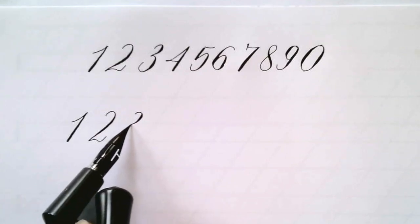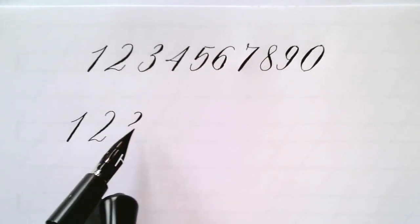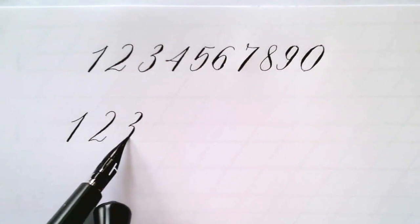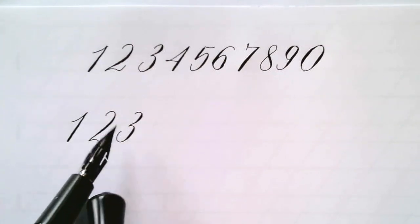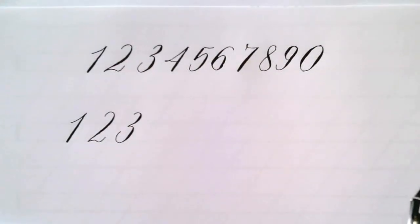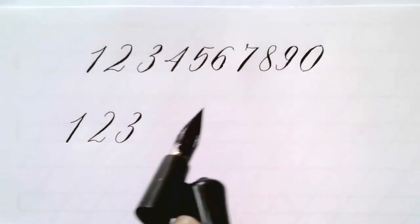The three has a small curve that transcends the waistline and then the lower curve is a little larger than the first one. And again, remember to follow the 55 degree slant.